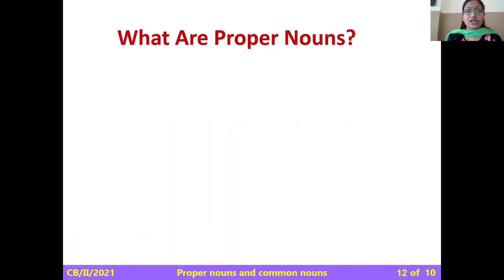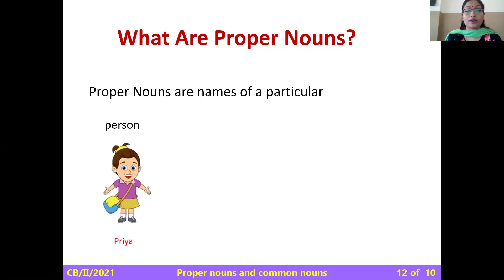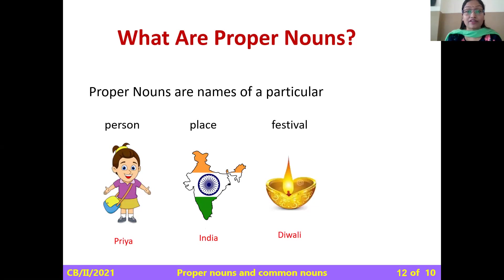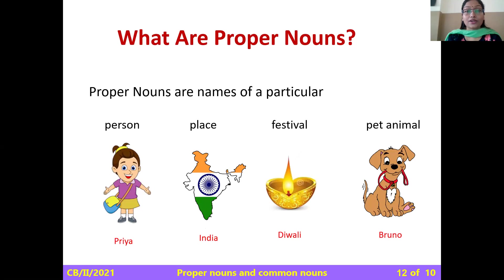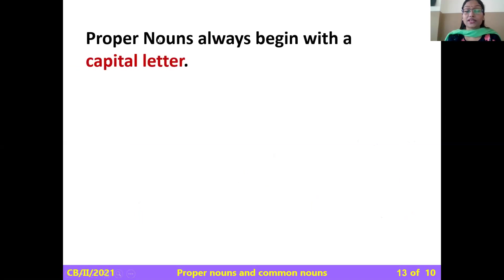Now we will see the second part of our topic: proper nouns. What are proper nouns? Proper nouns are names of a particular person, like Priya; a particular place, like India; a festival, like Diwali; or a pet animal, like Bruno — because we can name them. Proper nouns always begin with a capital letter.